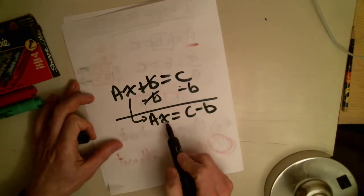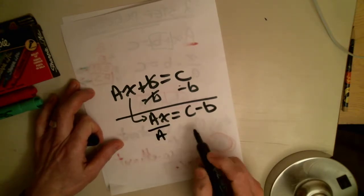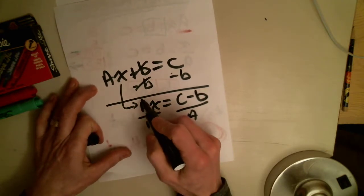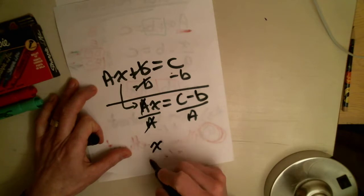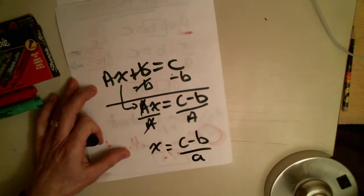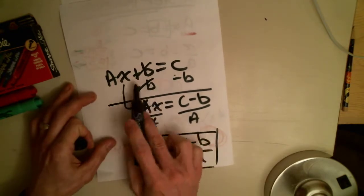Now, how is the a attached to the x? It's with multiplication. So what we need to do is we need to divide by a. So I divide each by a. Now, if this is a formula, a divided by a gives me one. And so that leaves me with one x equals c minus b divided by a. That's actually the formula on how to solve these problems.